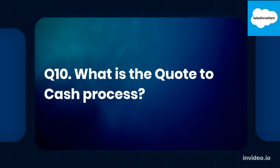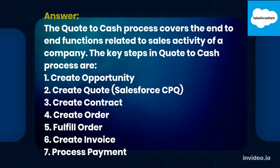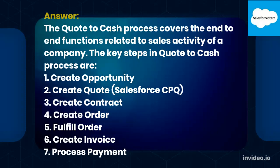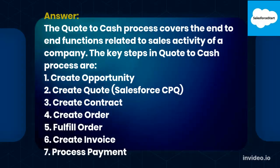Q10. What is the quote-to-cash process? Answer. The quote-to-cash process covers the end-to-end functions related to sales activity of a company. The key steps in the quote-to-cash process are: 1. Create Opportunity, 2. Create Quote (Salesforce CPQ), 3. Create Contract, 4. Create Order, 5. Fulfill Order, 6. Create Invoice, 7. Process Payment.